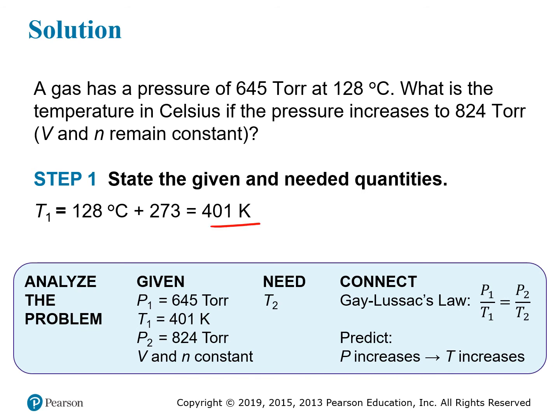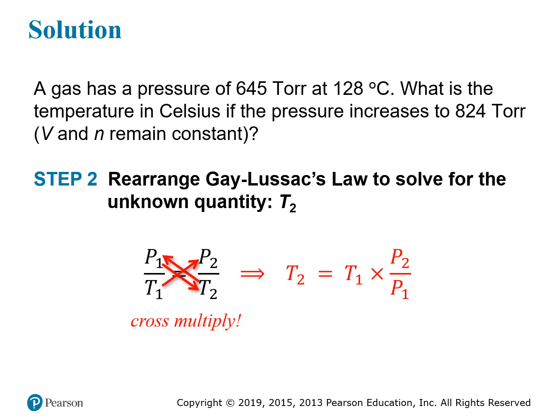Start by converting temperatures to Kelvin: 128 plus 273 gives 401 K. We have everything except T2. Since pressure is increasing from 645 torr to 824 torr, we expect the temperature to increase as well. Rearranging Gay-Lussac's Law by cross-multiplying to isolate T2 gives us the expression for T2. For a refresher on the algebra, refer to the previous videos on Charles's Law, just substituting volume for pressure.